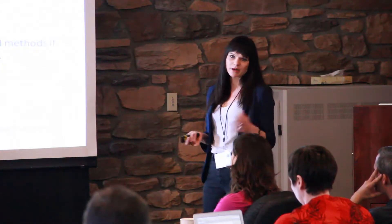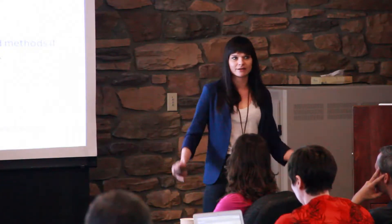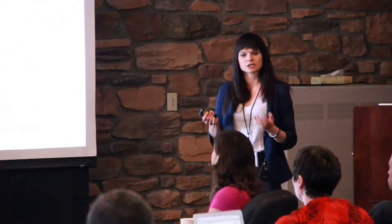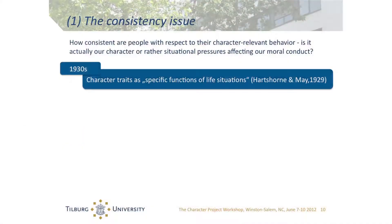Let's start with the consistency issue — it has been the most devastating critique of the psychology of character. It addresses how consistent people are with respect to their character or behavior. Is it our character, or is it rather situational pressures affecting our moral conduct? In the late 1920s and early 1930s, the Hartshorne and May studies sounded the death knell for early character research by showing that cross-situational consistency of moral behavior is rather low. A child may be consistently honest with peers but not with parents or teachers. They concluded that character traits are not robust at all but rather specific functions of life situations.